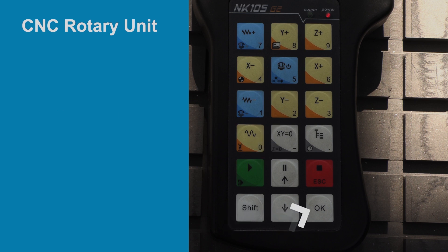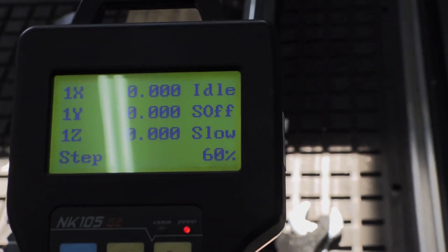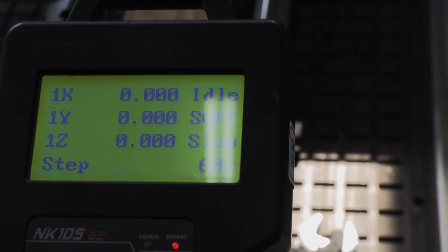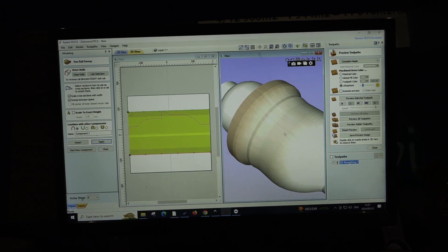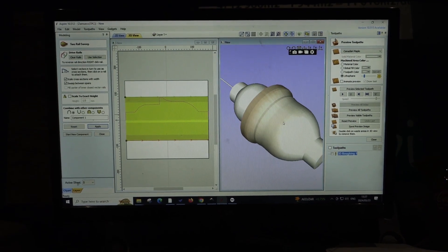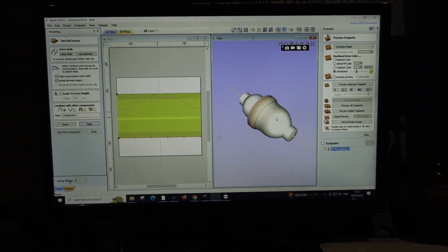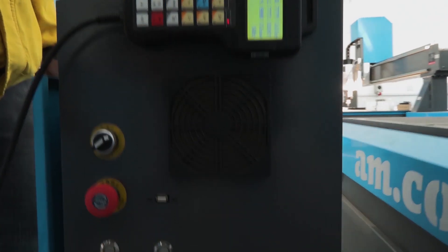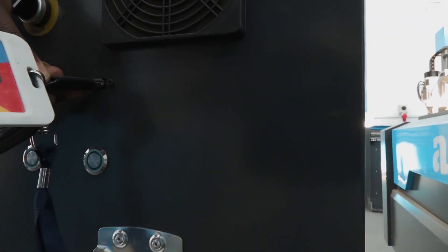Now, all the coordinates are on 0, 0, and 0 value and we are ready to cut. So now, once we are finished with the artwork in our software, we save our design to a USB and put the USB into the router.